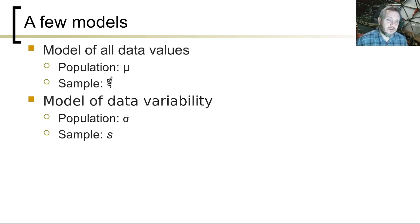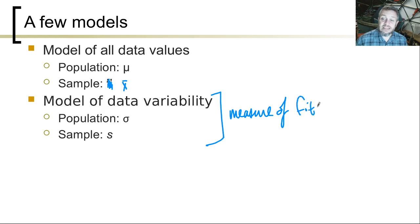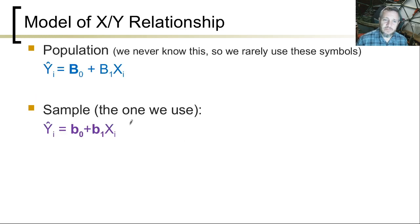So we have some models. A mean is a model of all of our data values, and we have a symbol for the population mean and a symbol for the sample mean. A model of data variability is the standard deviation — it's the measure of the fit of this model, how well the mean fits the data. So variance and standard deviation are residuals. We've got our model of the XY relationship — think of it as like a two-dimensional mean instead of a one-dimensional mean. A mean is just one point — it's one number, so it's one-dimensional. A two-dimensional mean is a regression line.